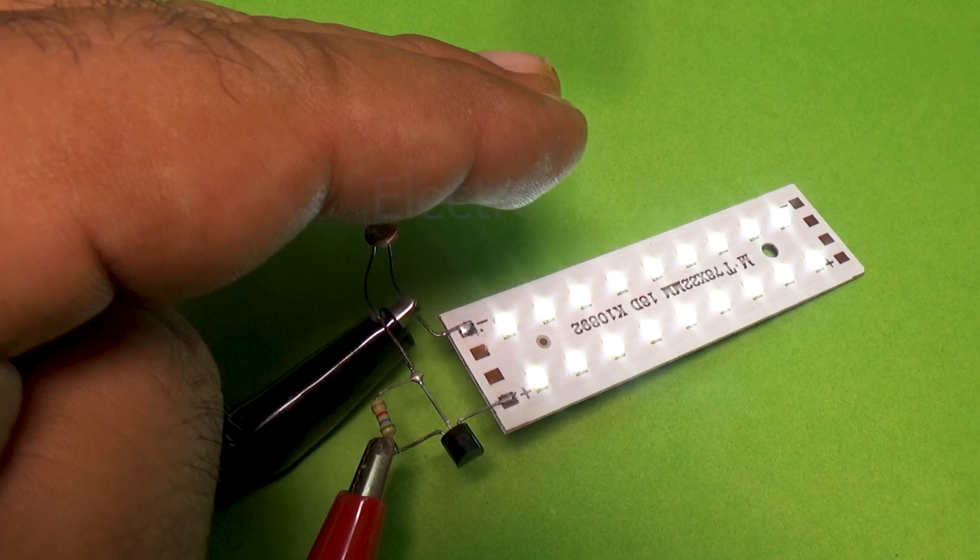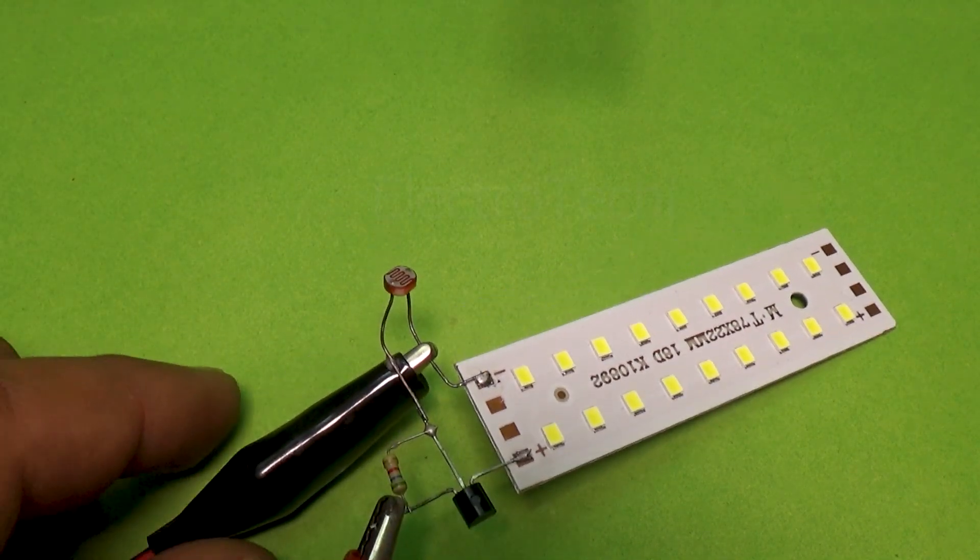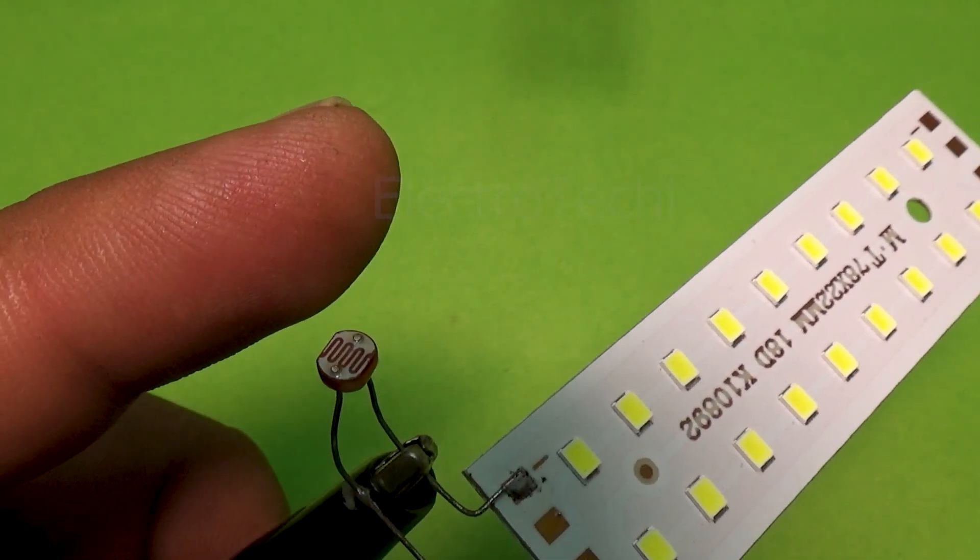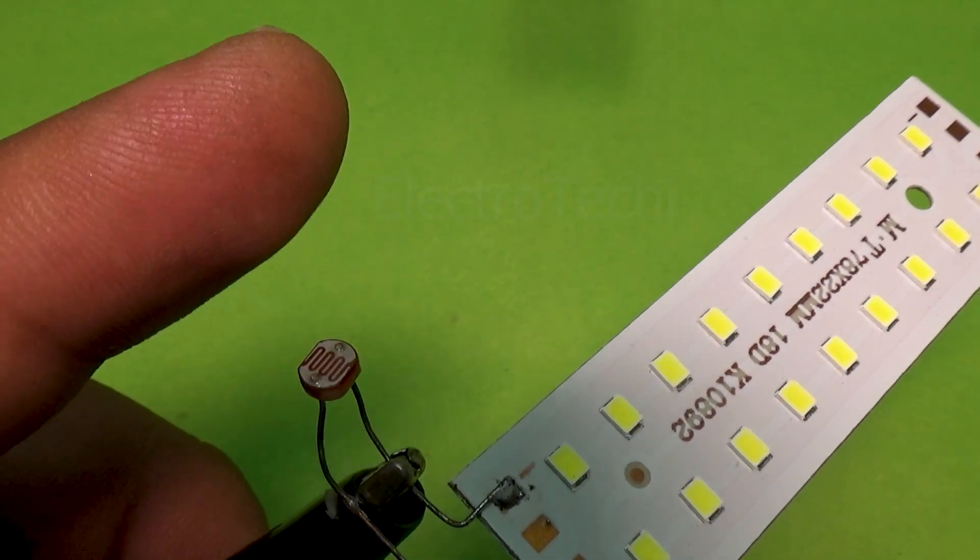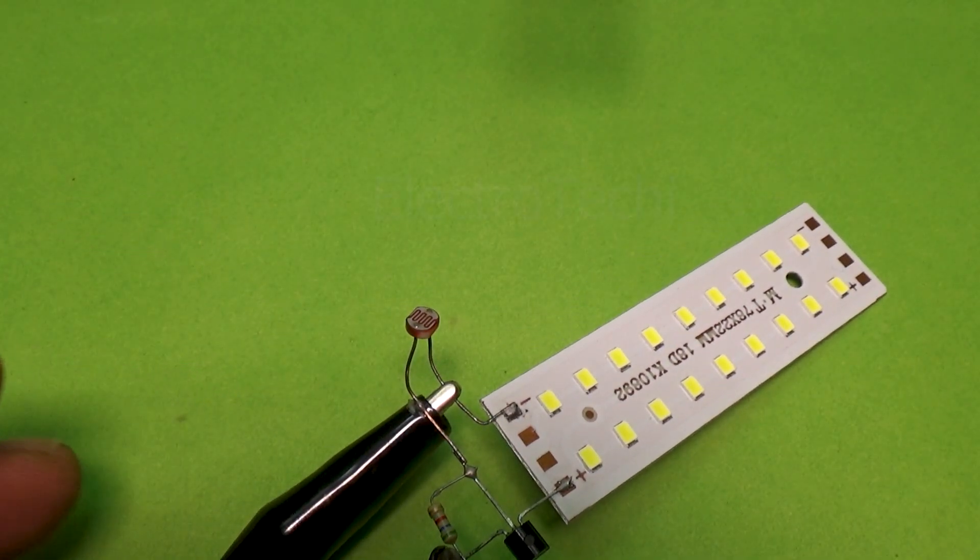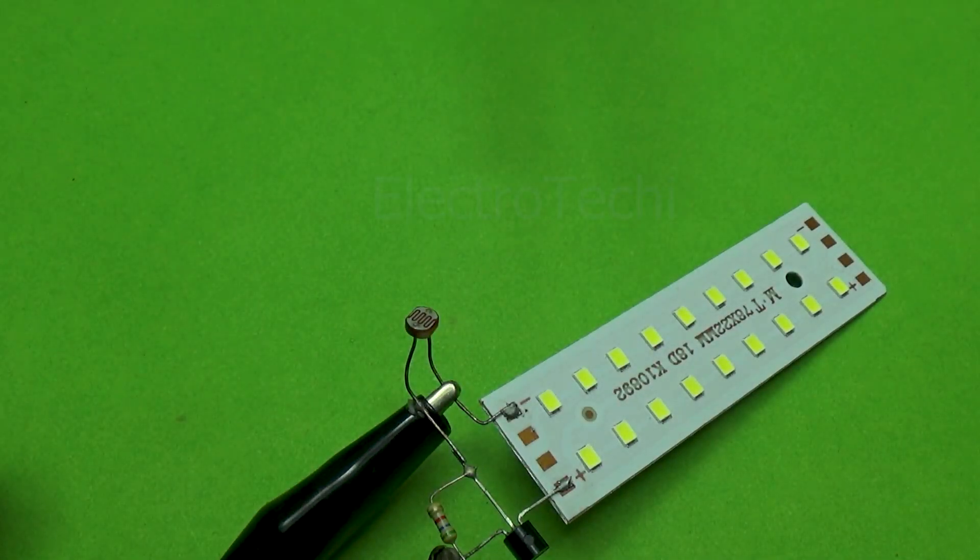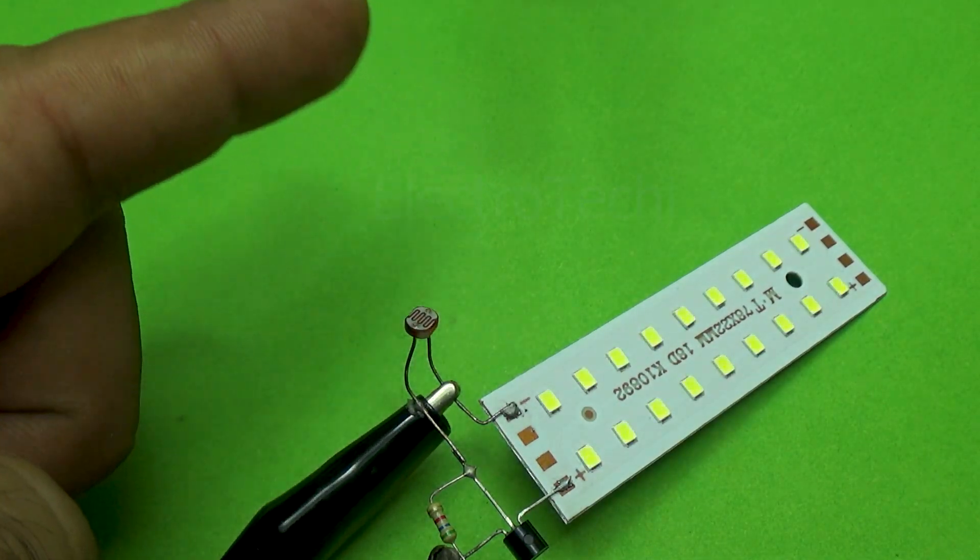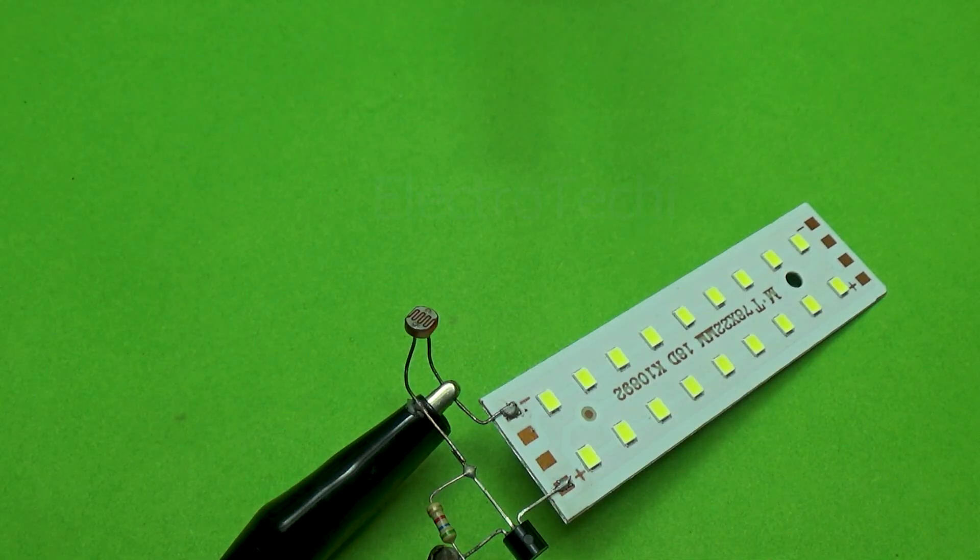But when it becomes dark, the LDR's resistance increases sharply. This raises the voltage at the base of the transistor. Once the base voltage crosses approximately 0.7 volts, the transistor switch is on. Current now flows from collector to emitter, powering the LED, and it lights up automatically. That's the magic of a simple transistor switch, controlled entirely by light intensity.